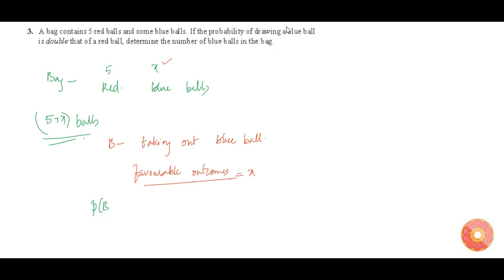The probability of event B is equal to the total number of favorable outcomes for the event divided by the total number of possibilities. The favorable outcome is x, and the total number of possibilities is 5 plus x — since you can draw any one ball from these 5 plus x balls. So the probability that the ball drawn is blue is x divided by 5 plus x.